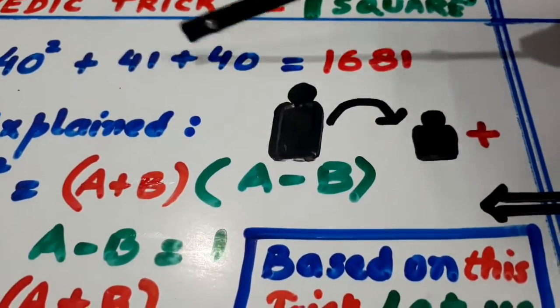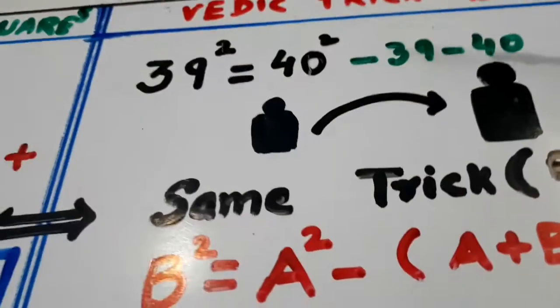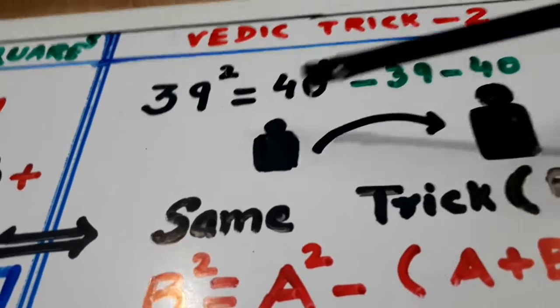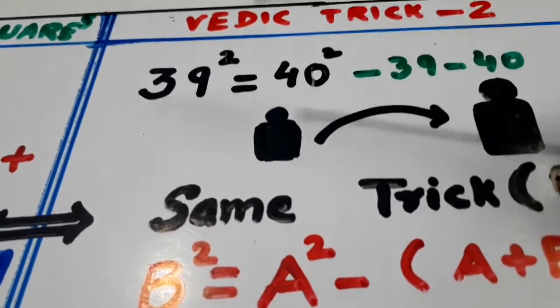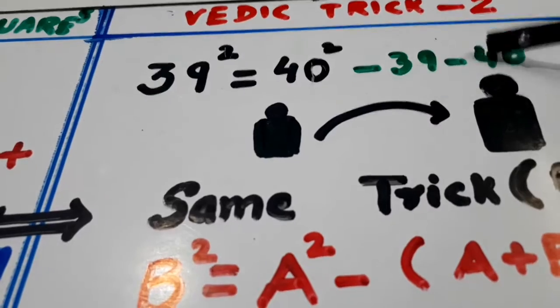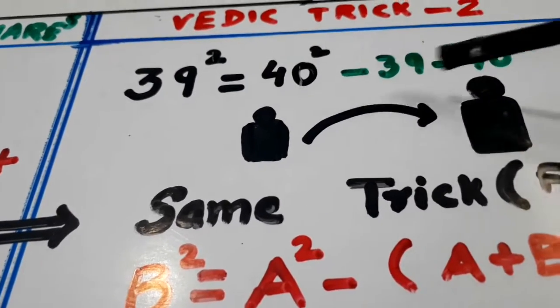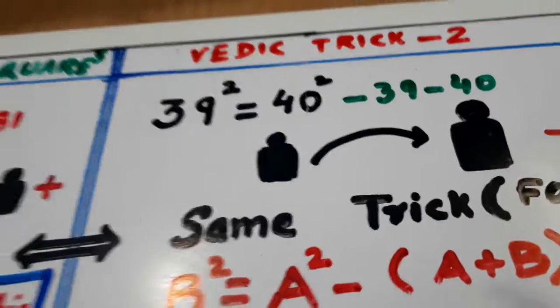Vohan peh haam nne kya kya tha. Plus kiya tha. Yaha peh kya karengi? Minus karengi. So 39 square is equal to 40 square. Ek bada do. Or yeh kam kar do. 39, 40. Yeh 39 hai, yeh 40 hai. Yeh minus kar do. Same bhai.